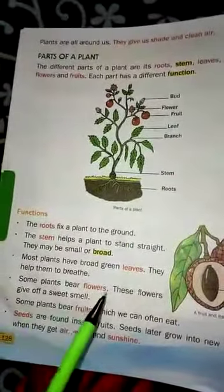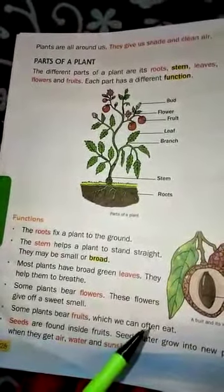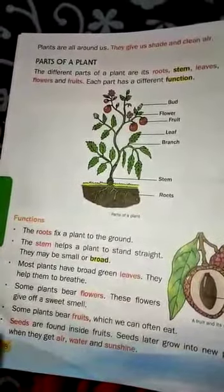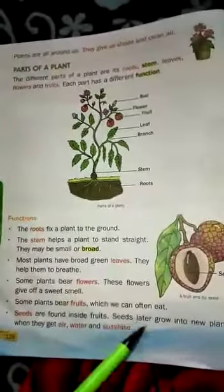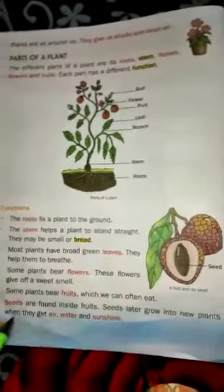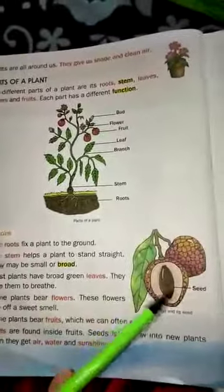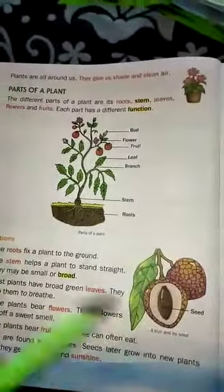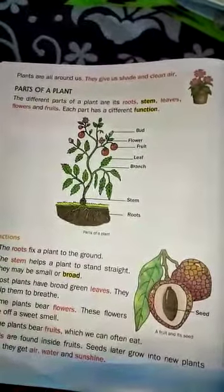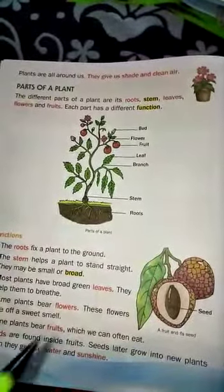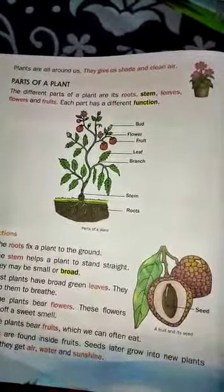Some plants bear fruit, some plants bear flowers also. That means plants give us fruits and flowers. Another part — seeds are found inside fruits. Seeds later grow into new plants when they get air, water and sunshine. We find seeds inside a fruit and these seeds later become a new plant when they get air, water and sunlight.